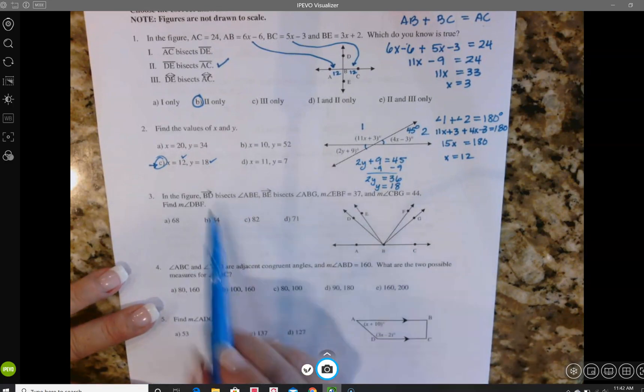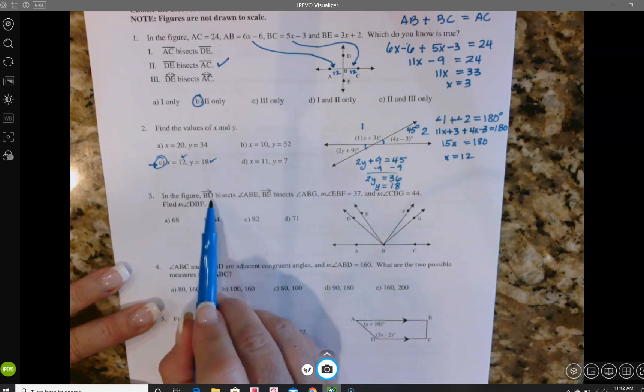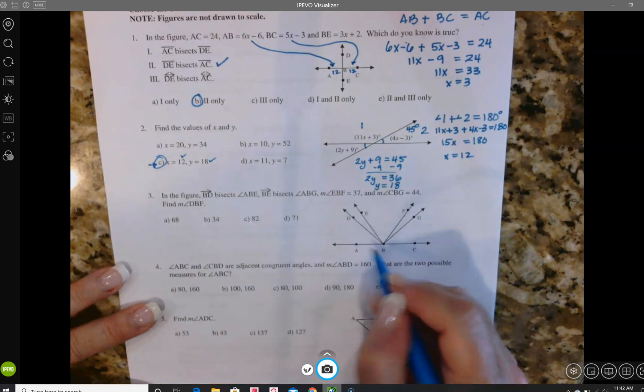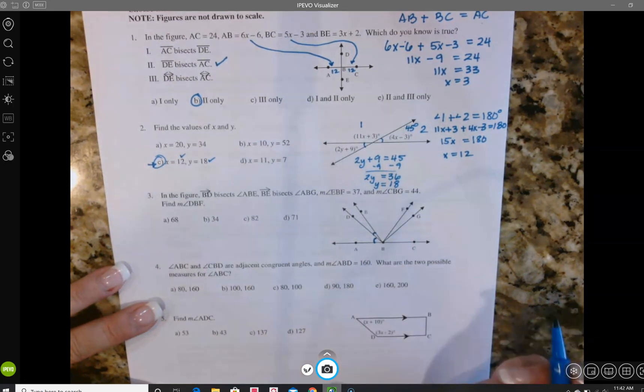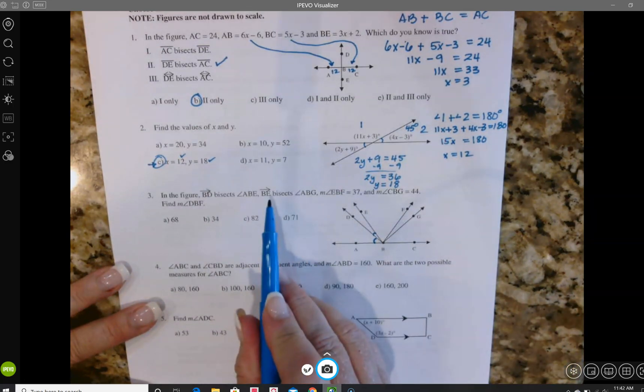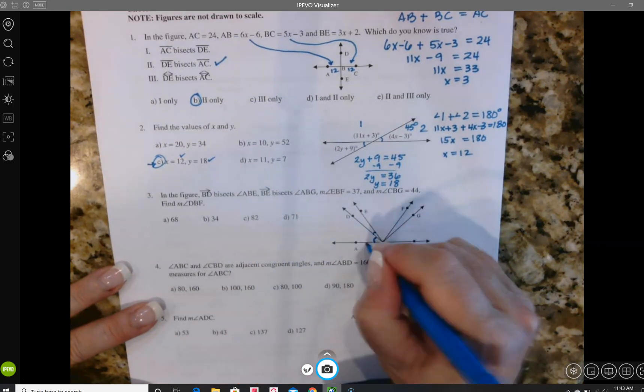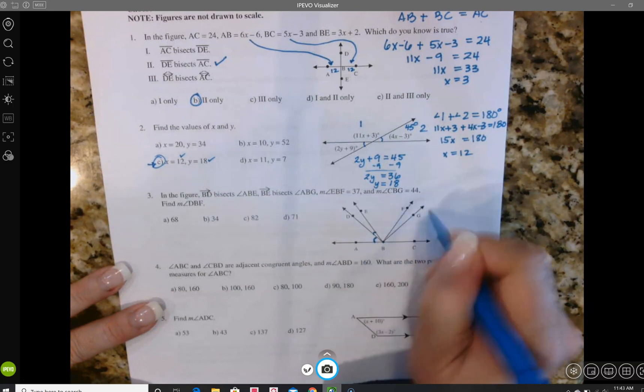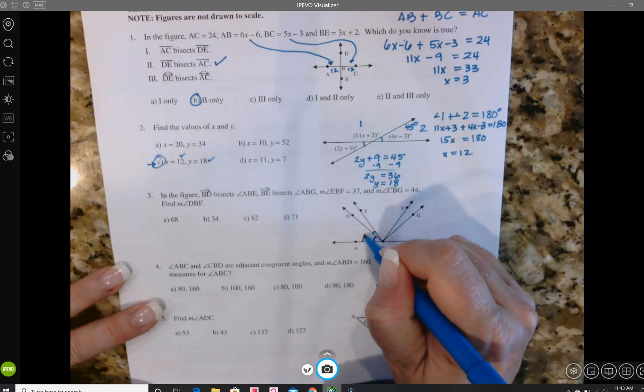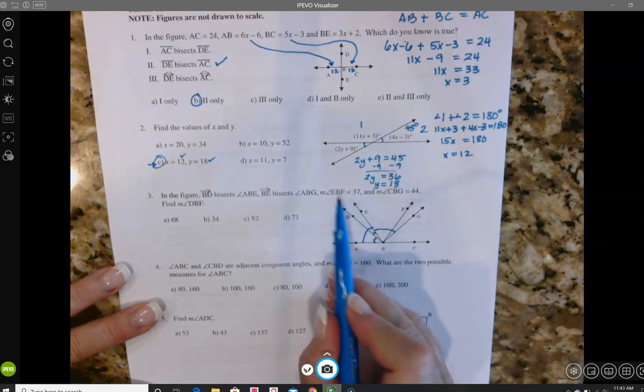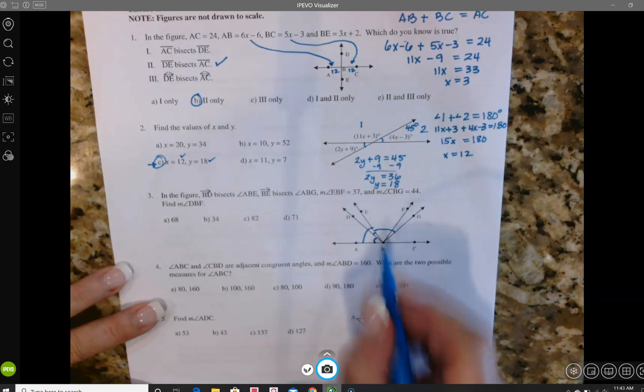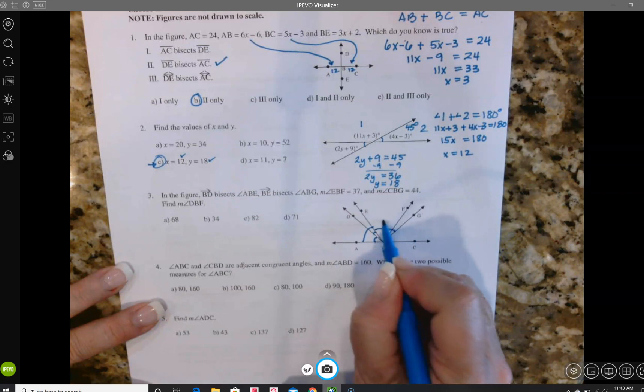In number 3 we have lots of lines coming here, so I'm going to very carefully read and mark my diagram. BD bisects ABE, so here's BD, here's ABE, so I'm going to draw in some equal angle markers there. And then BE bisects ABG, so here's BE, so ABG is a little bit bigger, so I'm going to mark that those are congruent. Angle EBF is 37, so EBF is 37, and that's just this part right here. And CBG is 44.